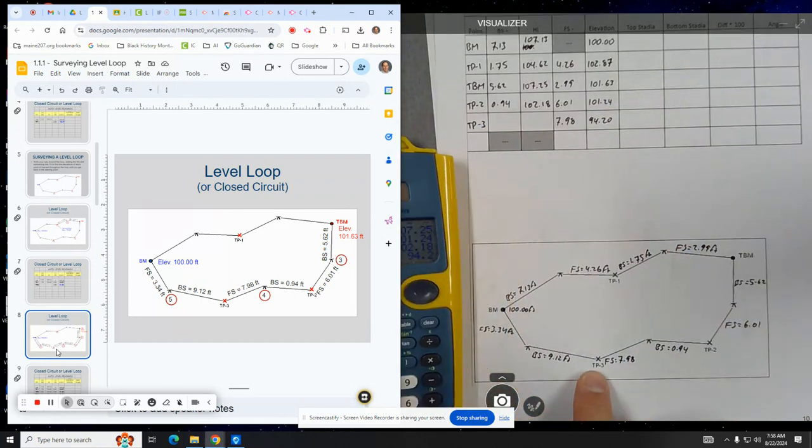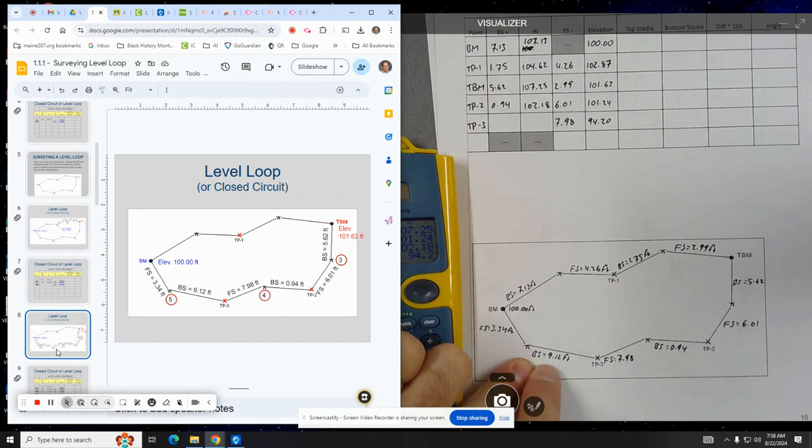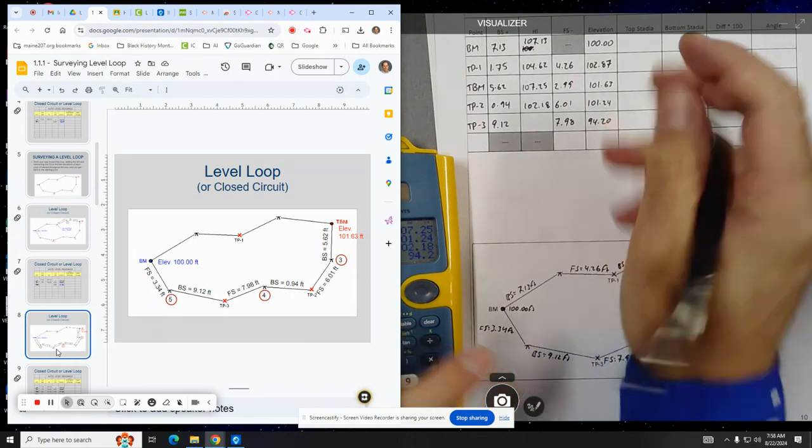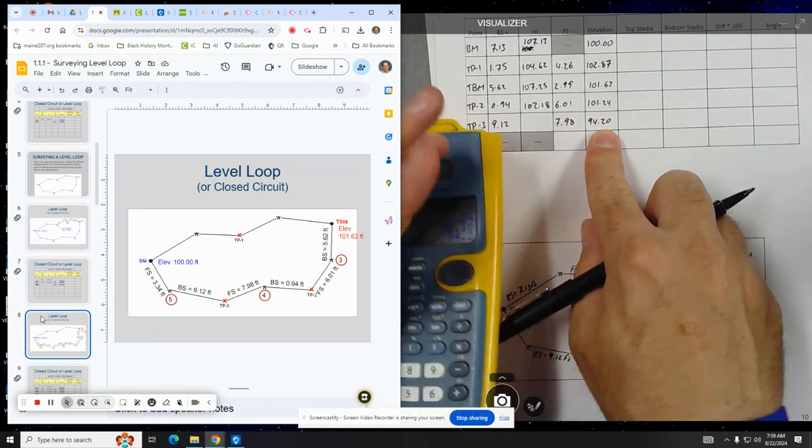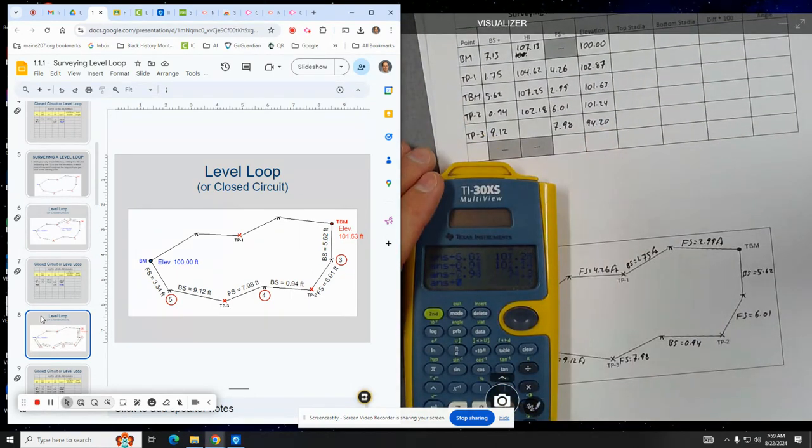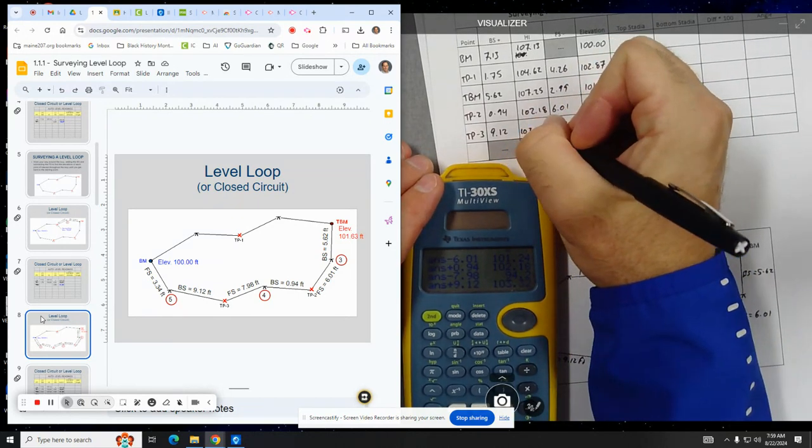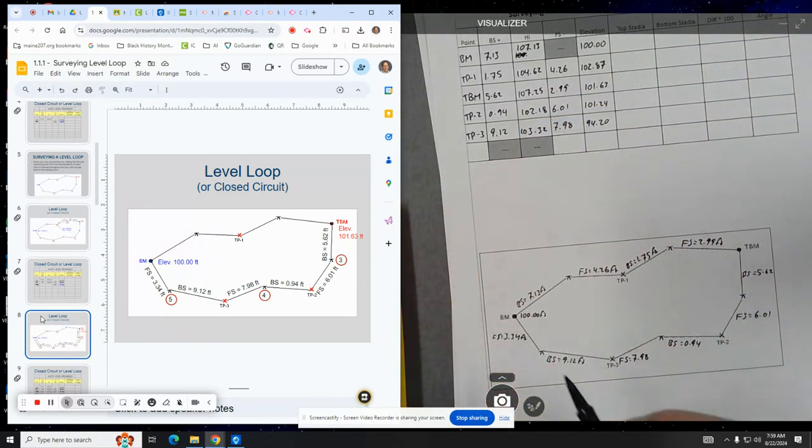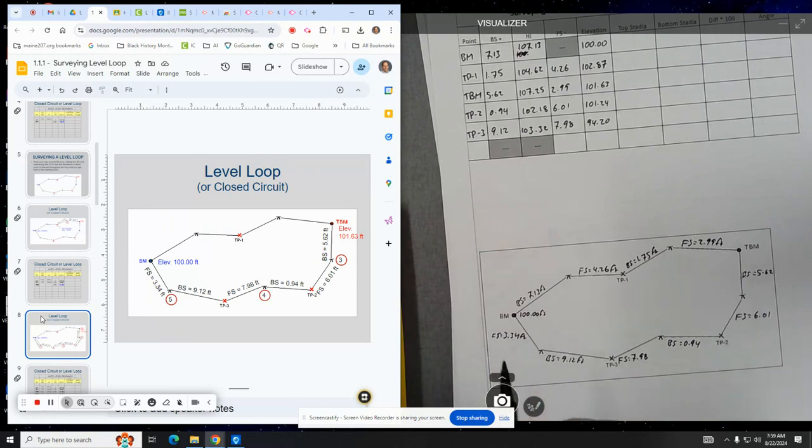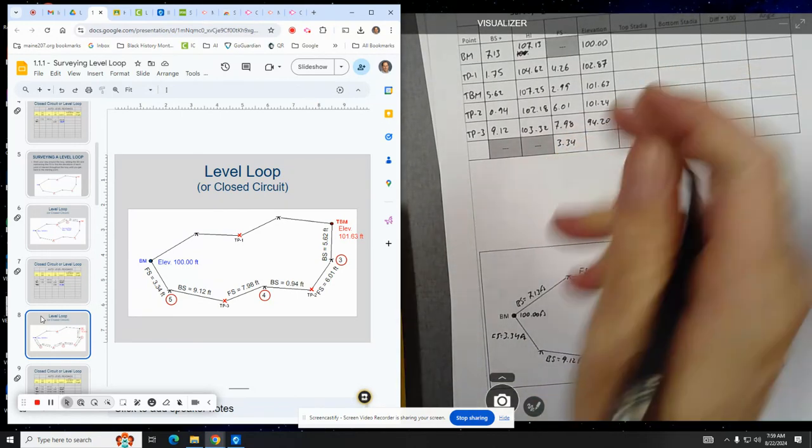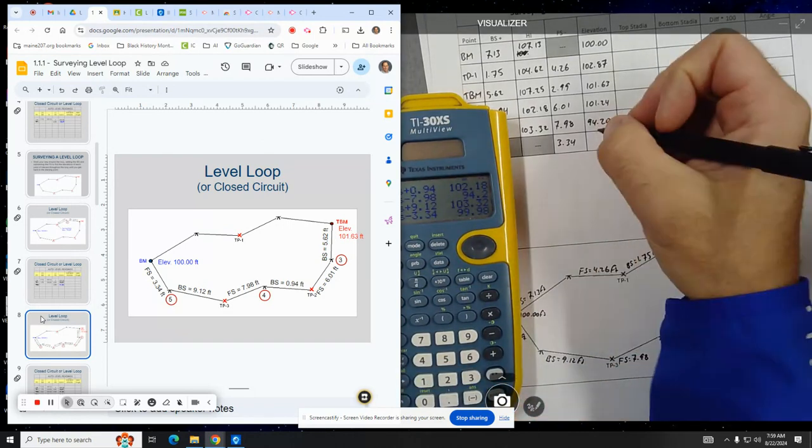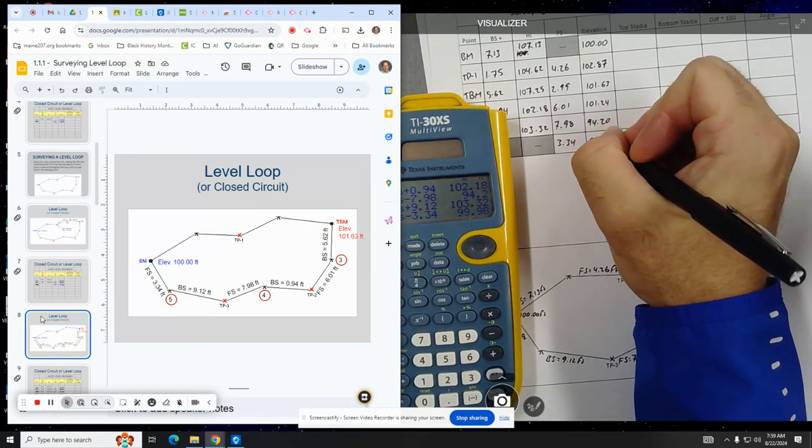And then looking forward, then when we move the instrument to here, we look back at TP3 and we get a back sight of 9.12. So we add that, 94.20 plus 9.12. We get 103.32. And then our final reading is our foresight back to the building monument, where the foresight is 3.34. And so we subtract 3.34. And you see we end up at 99.98.